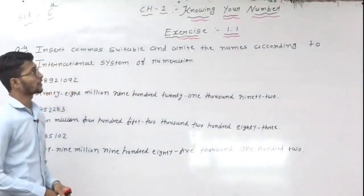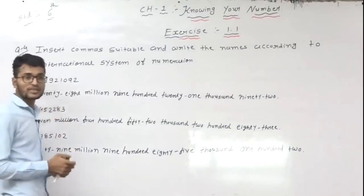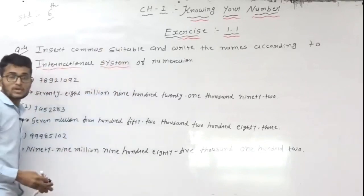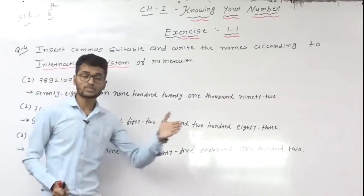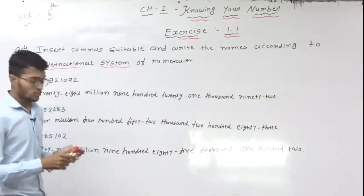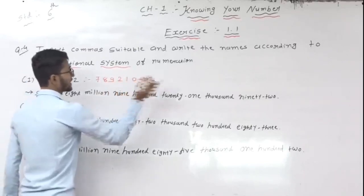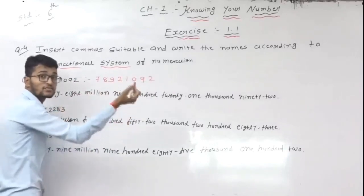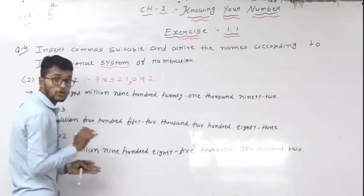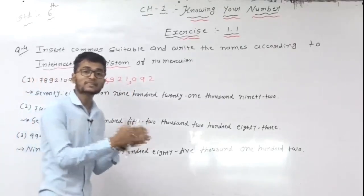Now continuing chapter 1, Knowing Our Numbers, Exercise 1.1, question number 4. Question 3 and question 4 are the same but with a small difference: question 3 uses the Indian system and question 4 uses the international system. In the Indian system, commas go after every 3 digits then every 2 digits. But in the international system, commas go after every 3 digits throughout. Given number: 78921092. First 3 digits, comma, then 3 digits, comma, then put the remaining.